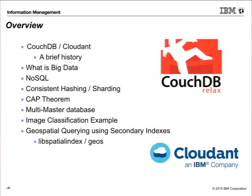What does it mean for other databases such as Oracle or Postgres? Then we're going to talk about its multi-master architecture. Rather than having a master-slave, everything is a master. And then we're going to take a classical GIS example of doing an image classification and show how you could do that the traditional way or how you could do it with CouchDB. And then we're going to talk a bit more about our open source development with the spatial index and GEOS.